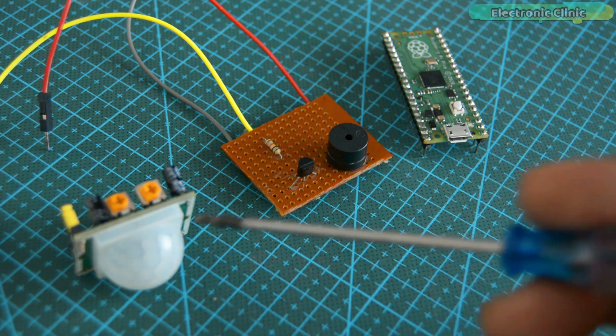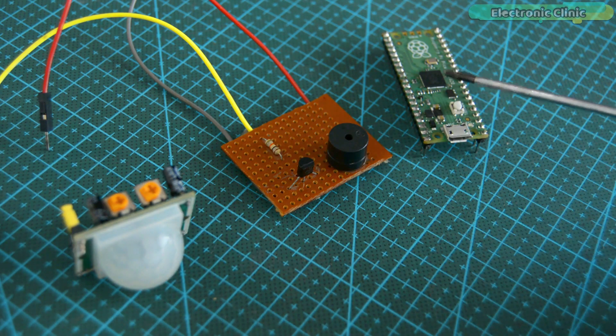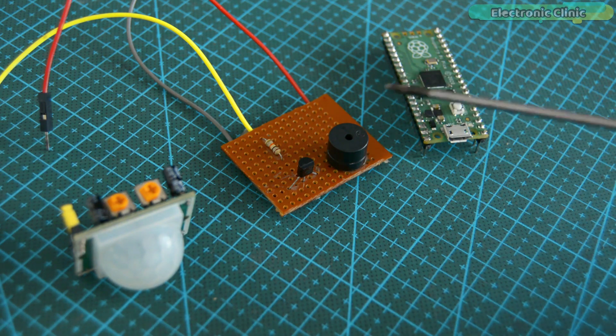In example number 10, I will show you how to use a PIR sensor and a 5V buzzer with the Raspberry Pi Pico. We will be making a small security system.